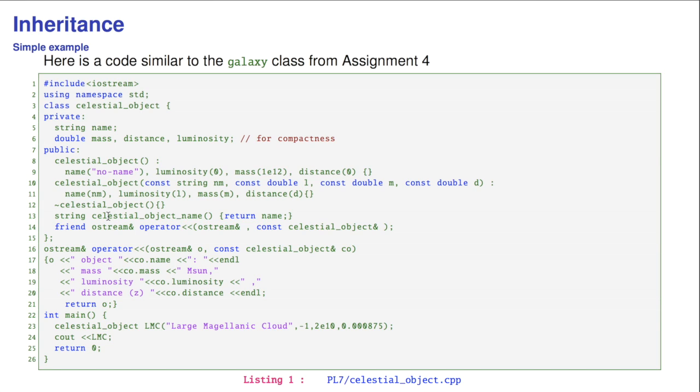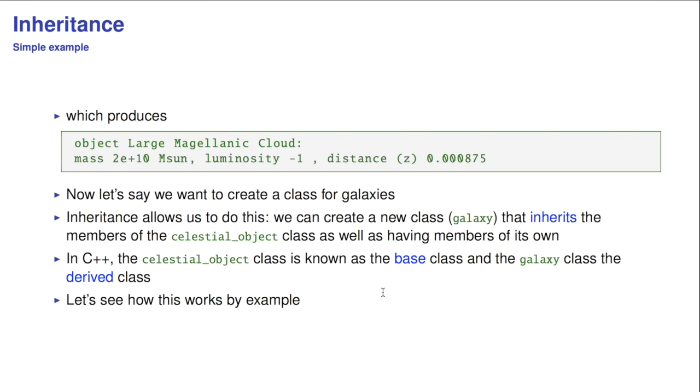We've got an accessor function, which returns the name value from a class. And we finally got a friend that inserts the celestial object in an output stream. And we declare that function outside the class as it should. Then in the main program we can initialize the celestial object. Here we've used the large Magellanic cloud. I set the luminosity to minus 1 because I don't really know what it is. I know it's about 20 billion solar masses heavy and has a redshift of 0.000875. And then we can output the object afterwards. And clearly if we run the code, it will run perfectly fine and output all of the information shown on the screen over here.